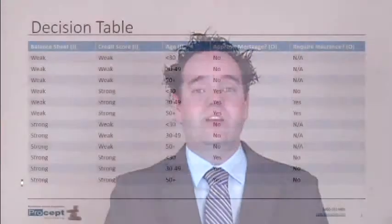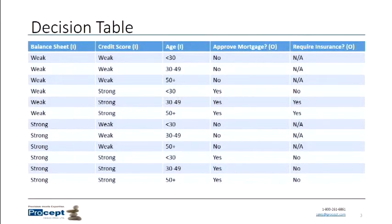For the rows of your table, for each input you need to identify what different values that input can take. If it's binary, it's going to be yes or no — only two forms. Your input might have ranges, as we see here for age: less than 30, between 30 and 49. We identified three different age ranges. In our example, we're making a decision on whether an applicant will receive a mortgage, considering three inputs: their balance sheet, their credit score, and their age.